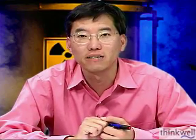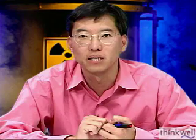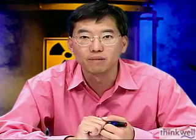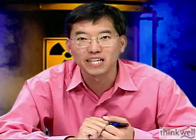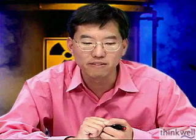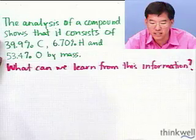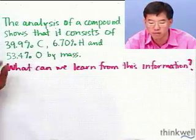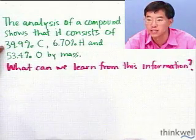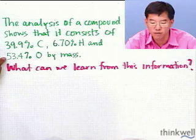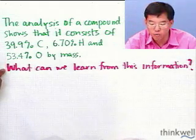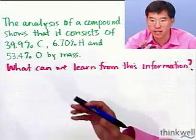Suppose you're an analytical chemist and you get called out to a site where there's been a horrible chemical spill, and your job is to figure out what the chemical is. A useful piece of information — less dangerous than tasting it — is the analysis by mass of the various elements that make up the molecule. For instance, a compound is found to consist of 39.9% carbon, 6.7% hydrogen, and 53.4% oxygen by mass. What can we learn from this about the unknown compound?